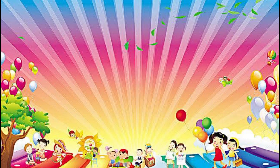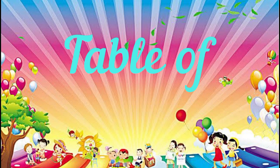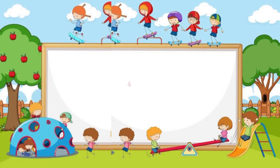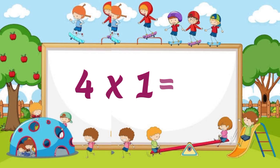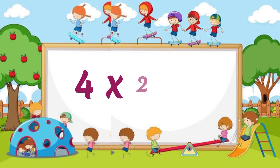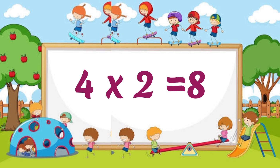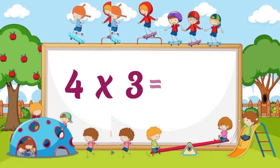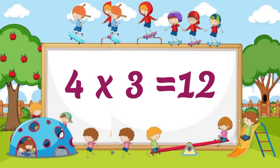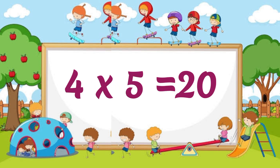Table of 4: 4 1's are 4, 4 2's are 8, 4 3's are 12, 4 4's are 16, 4 5's are 20.